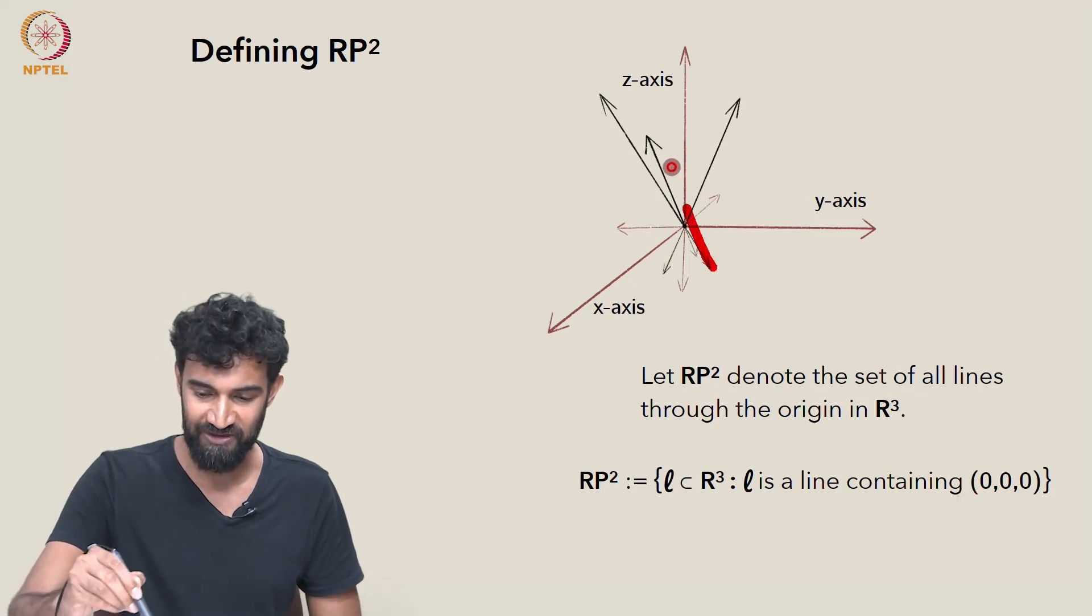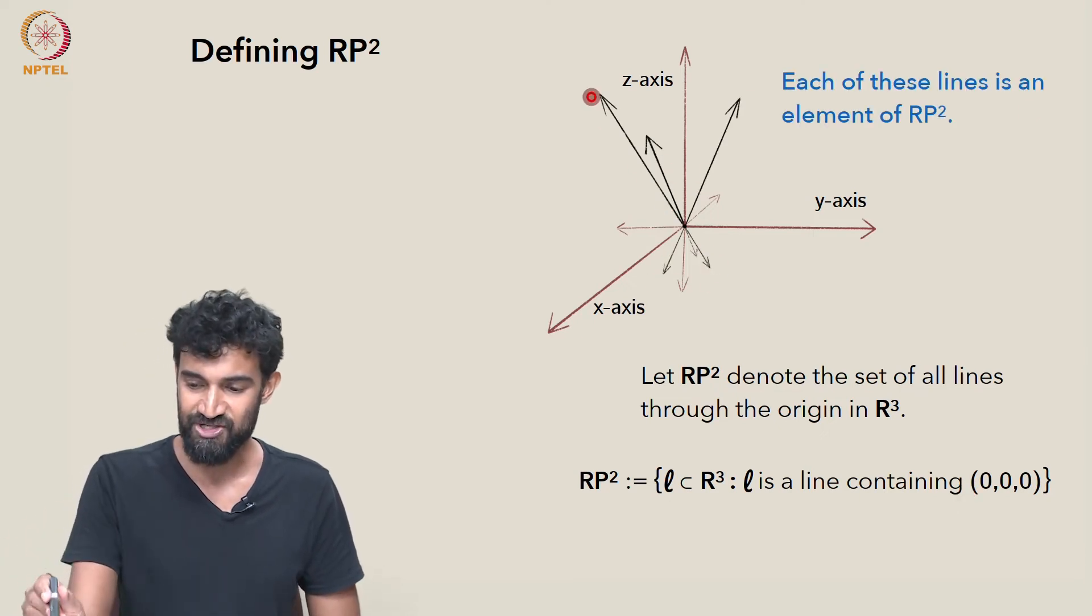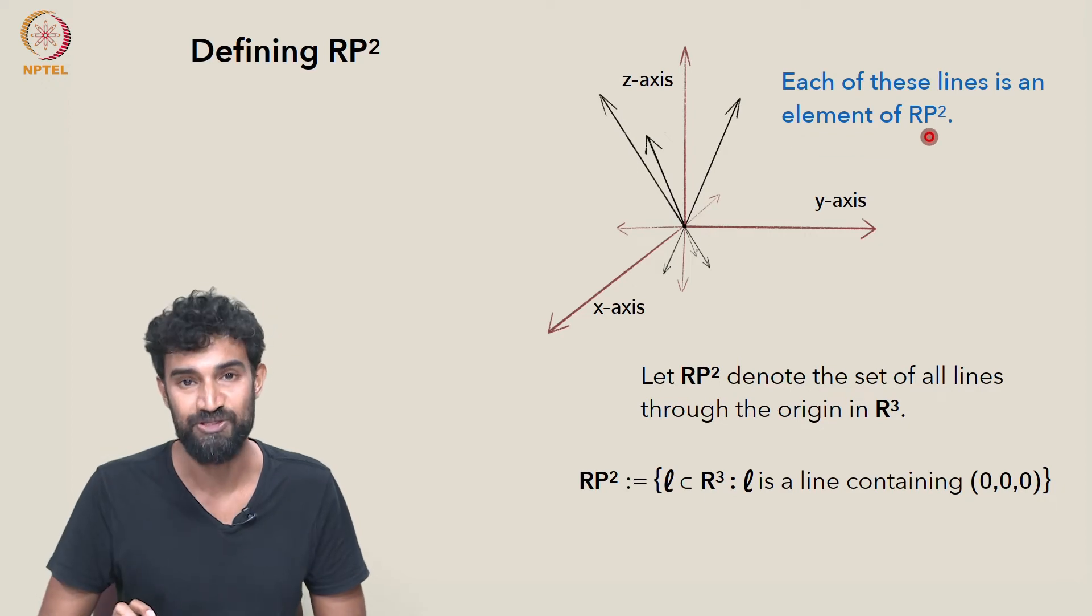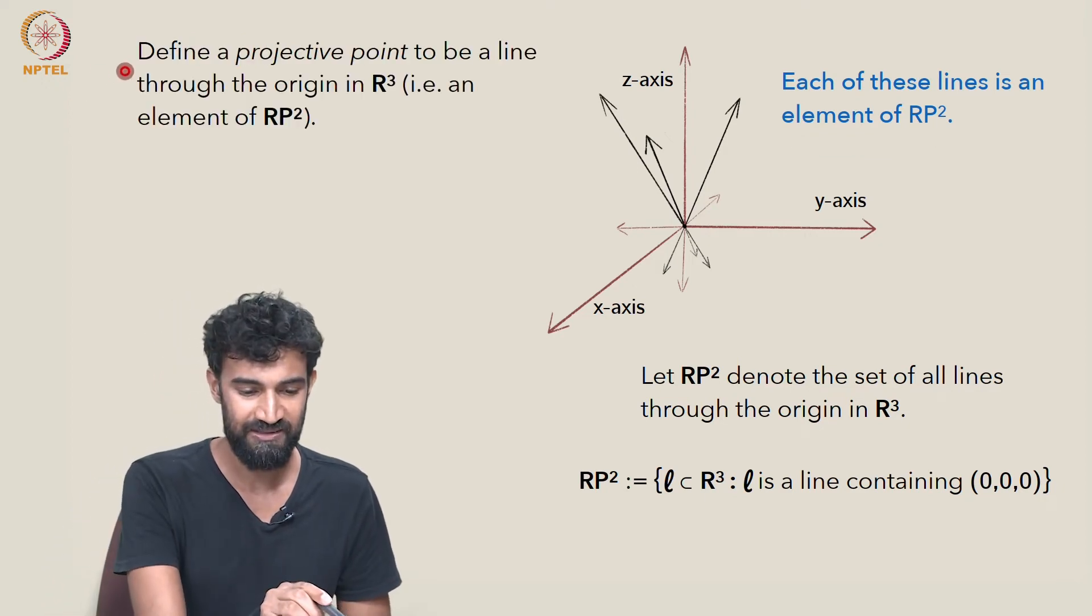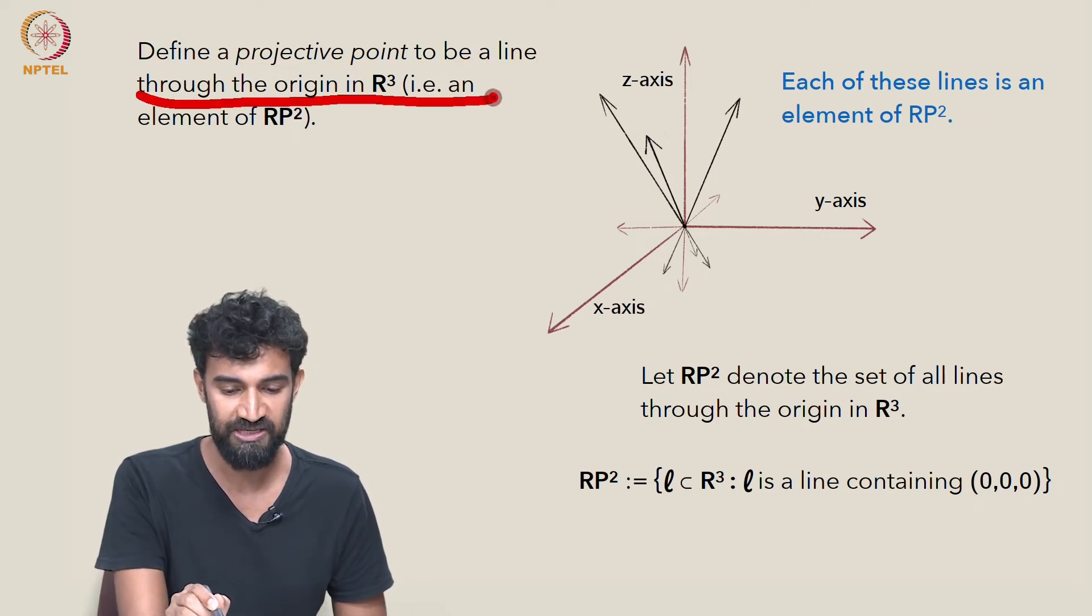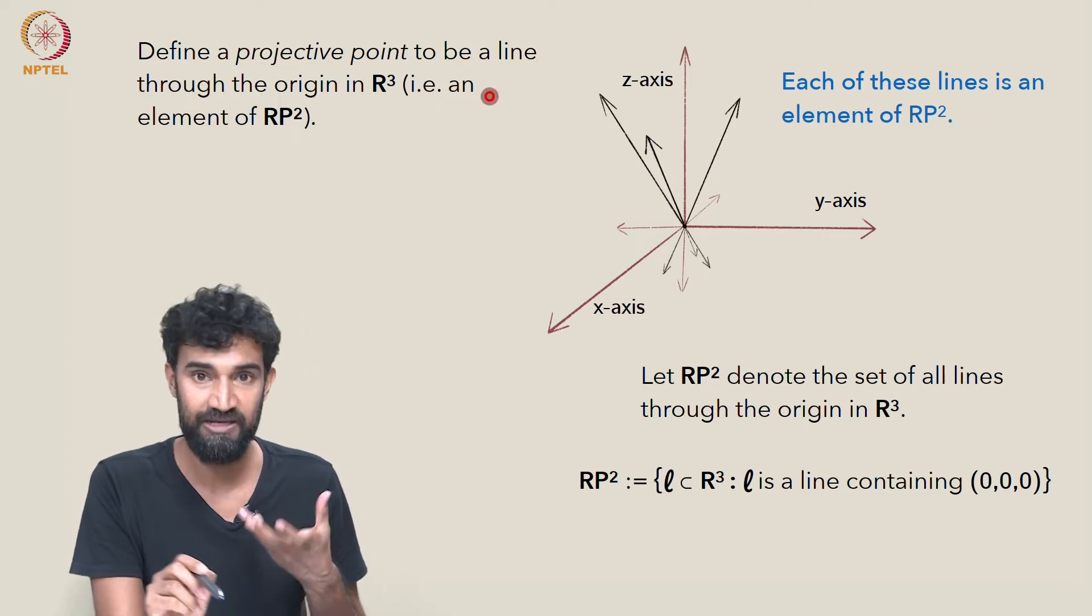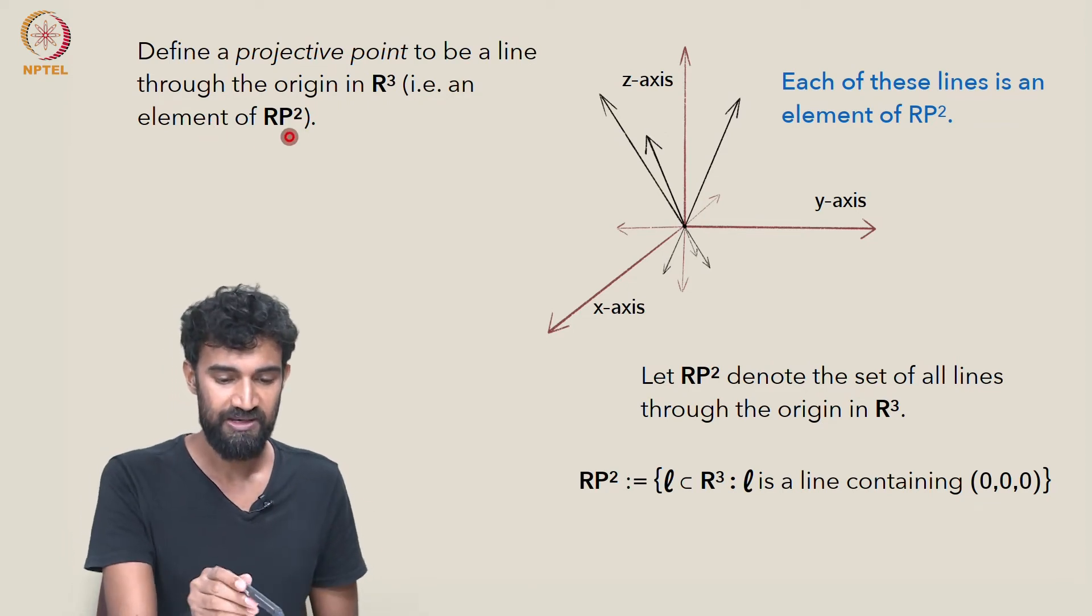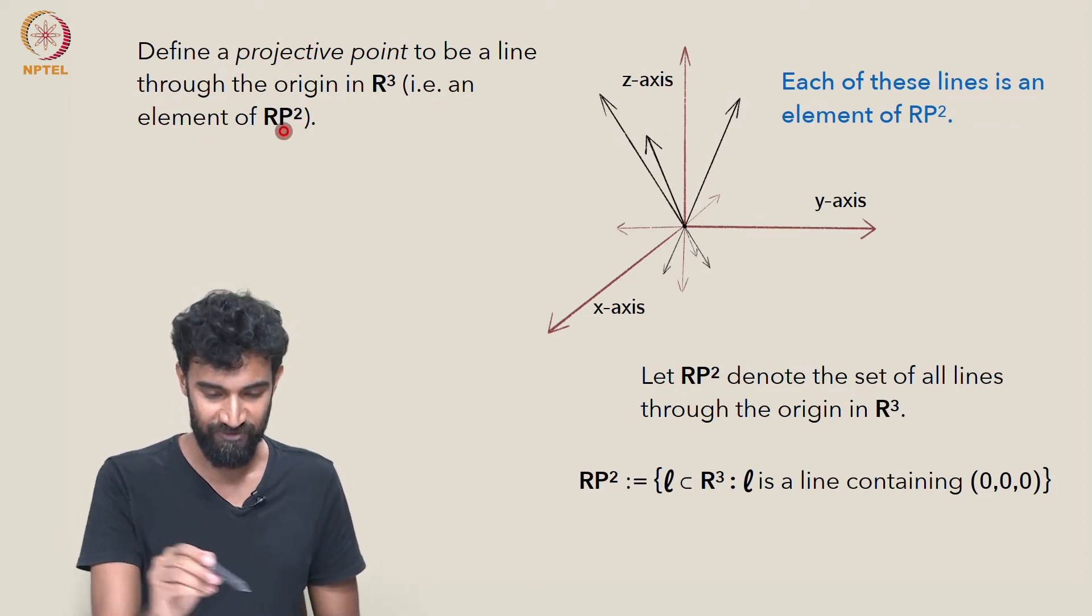So here's a bunch of lines through the origin, and each of these lines is an element of RP². So let's define a projective point to be a line through the origin in R³. In other words, an element of RP². So a projective point is just an element of RP².